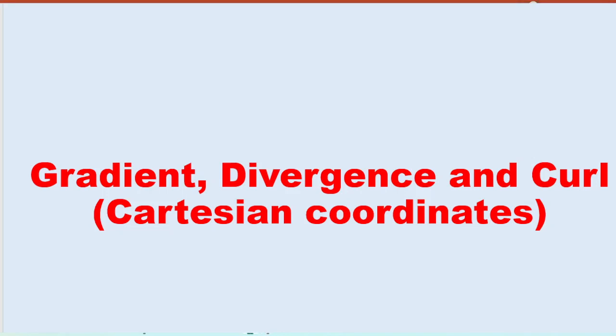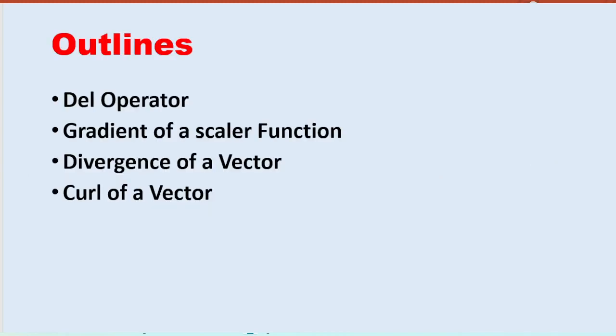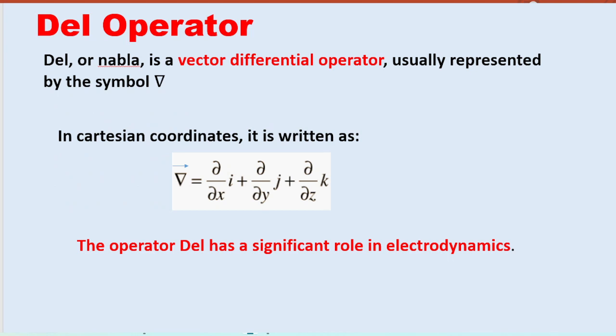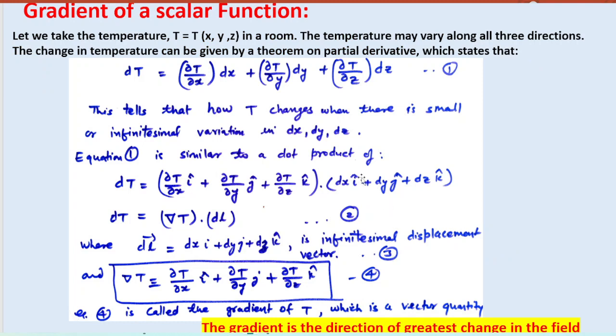In this video I will discuss the gradient, divergence, and curl in the Cartesian coordinate system. These functions are very important in electrodynamics. First I will discuss the del operator, and then the gradient of a scalar function, and then divergence and curl of a vector function. The del operator is a vector differential operator, represented by the reverse triangle symbol, also known as nabla.